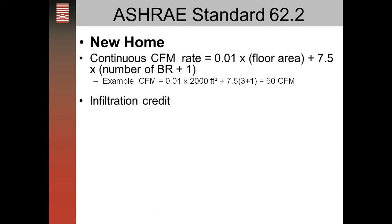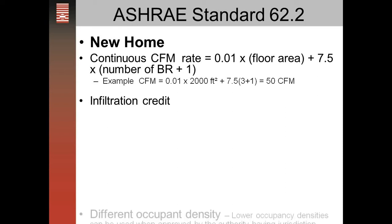If you enter the blower door information into the Tektite 4.0 blower door test software, it will calculate the infiltration credit. Leakier homes can reduce the continuous CFM rate, or if the house is leaky enough, the ventilation rate can be zero and you won't need to add ventilation.